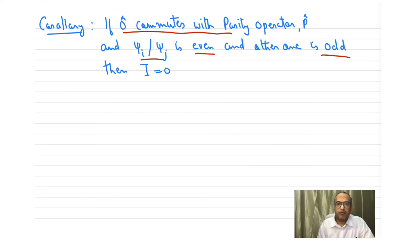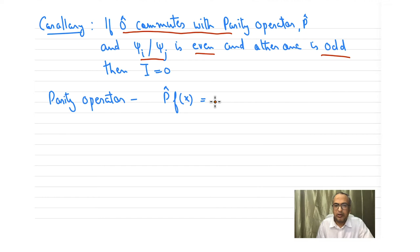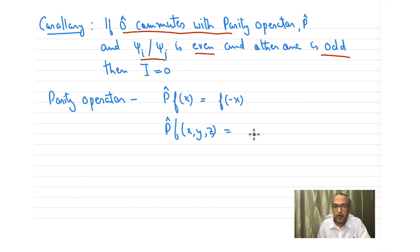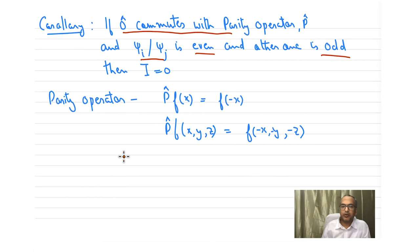So let us look at what a parity operator is. The parity operator, denoted by P, acting on any function inverts the sign of the variable. So P acting on f(x) gives f(−x). If it's a function in three variables, all three variables will have inverted sign: (−x, −y, −z). It's like flipping a function through the origin.